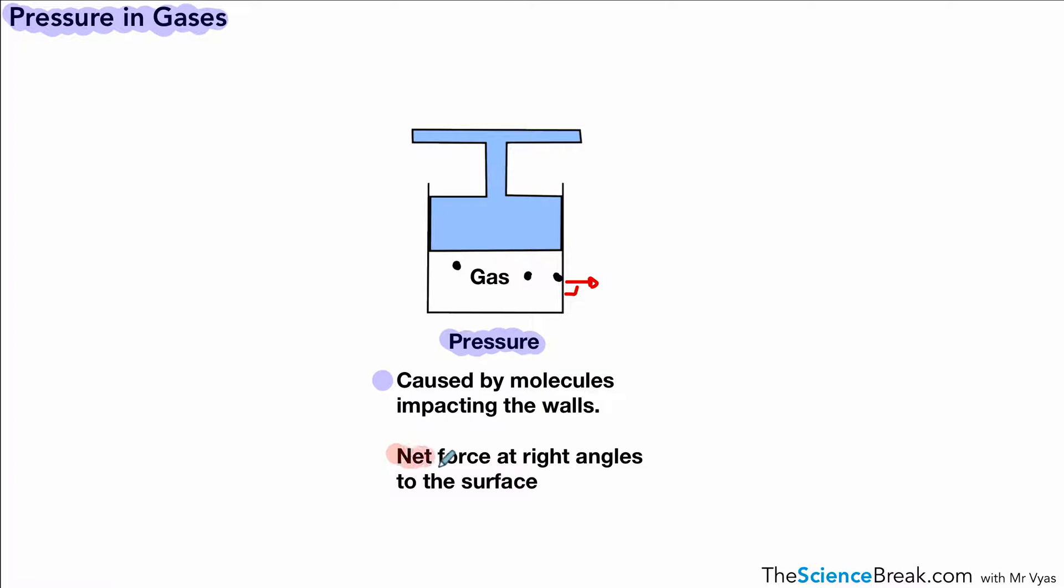That creates a force on the container. There's a net force at right angles to the surface. For pressure, we need two things: force and area. A certain force per given area causes the pressure of the gas on the inside walls of the container.